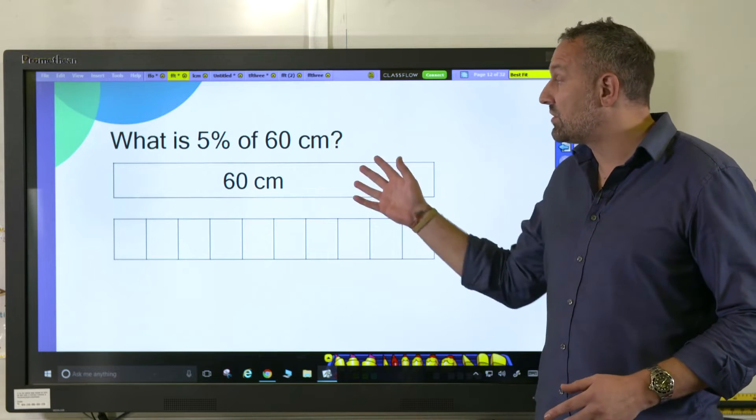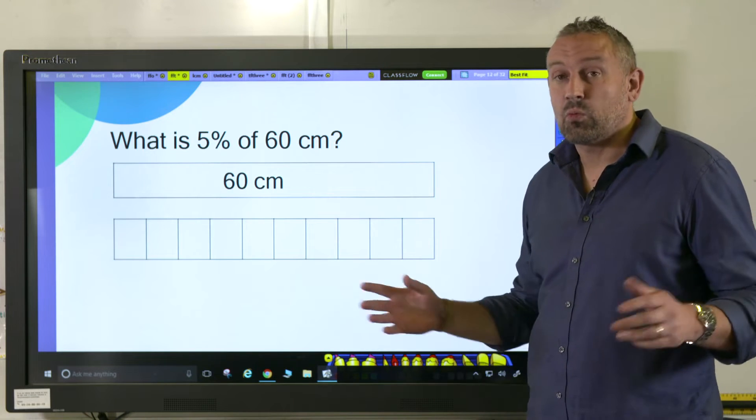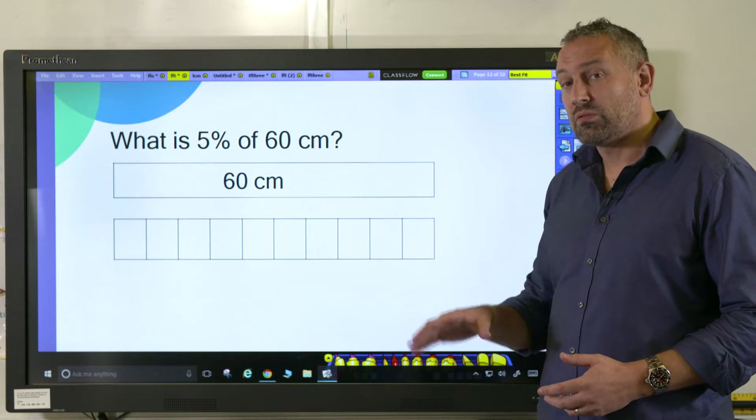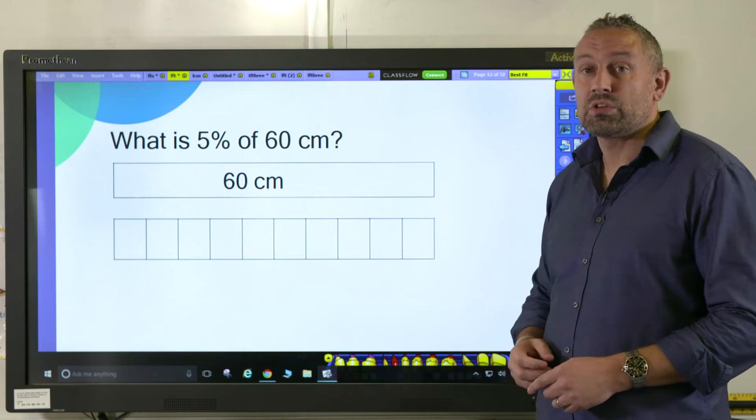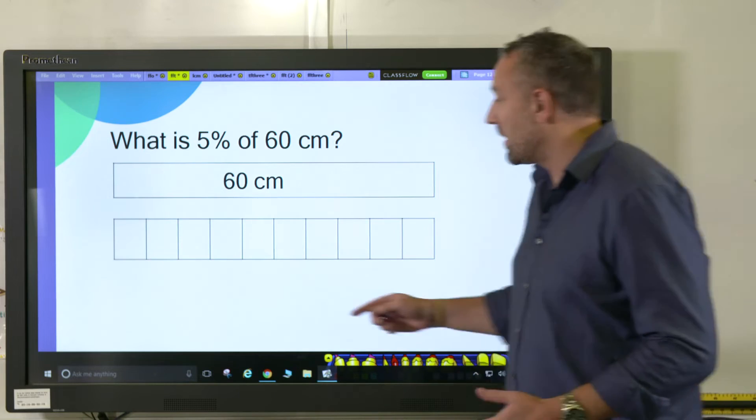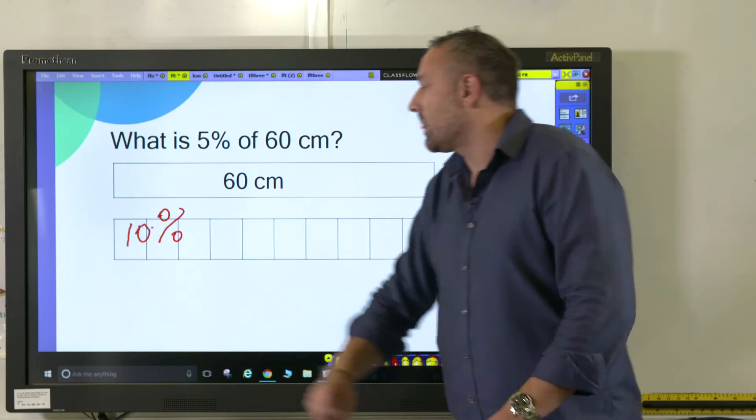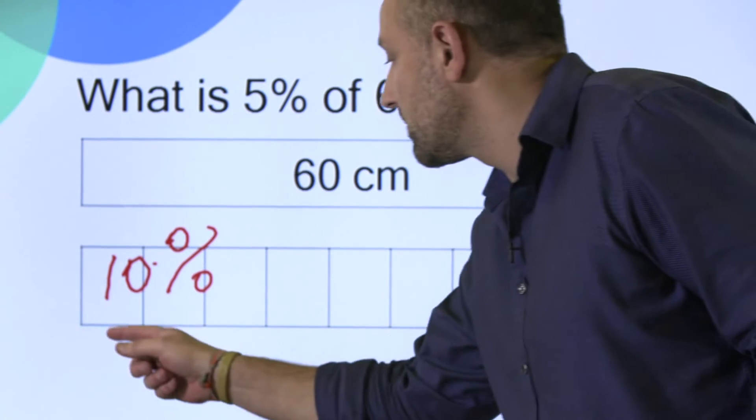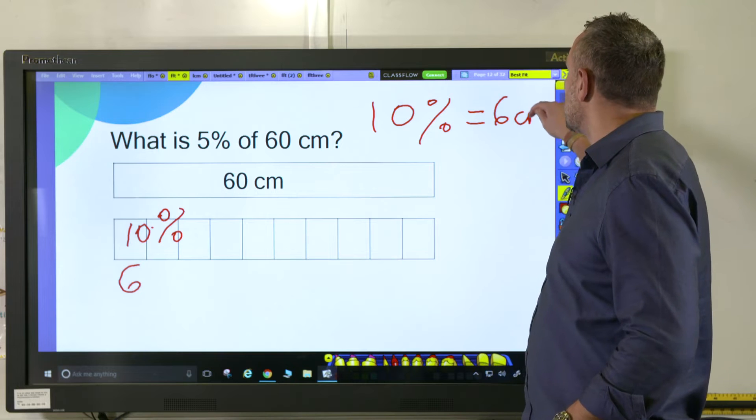Here's the next question: What is 5 percent of 60 centimeters? We have the bar showing 60 centimeters—that's 100 percent, the full amount. We're breaking the bar into 10 parts because it's really important that children understand that 100 divided by 10 equals 10, and that's how we break the chunks up. So 10 percent is one tenth or 0.1. If we do 60 divided by 10, we get six, so 10 percent of the amount equals six centimeters.